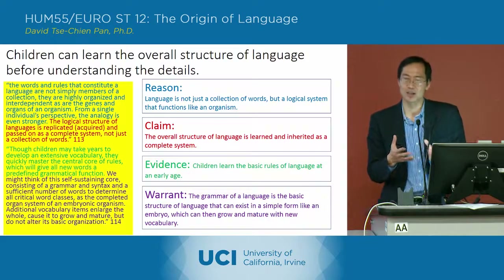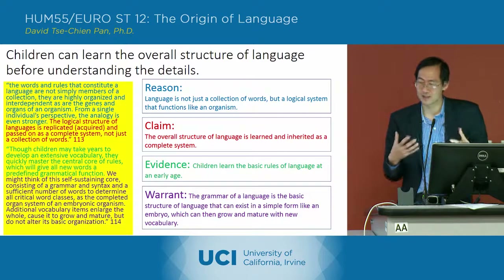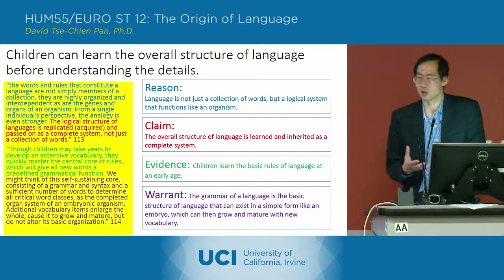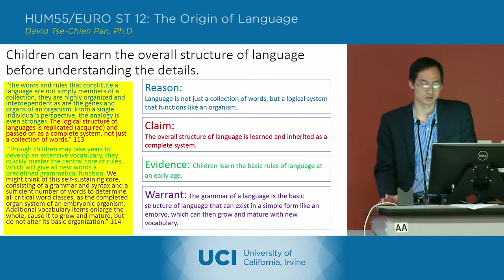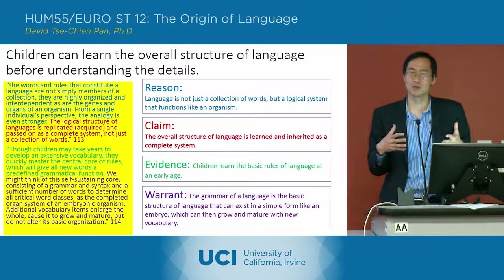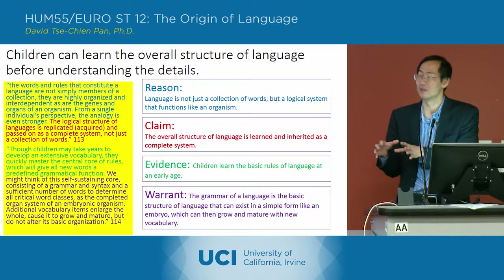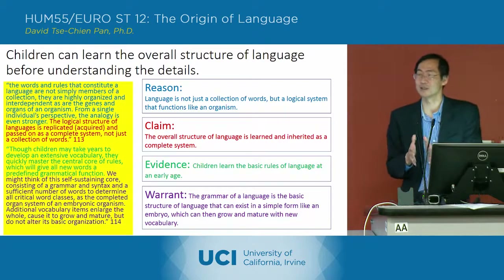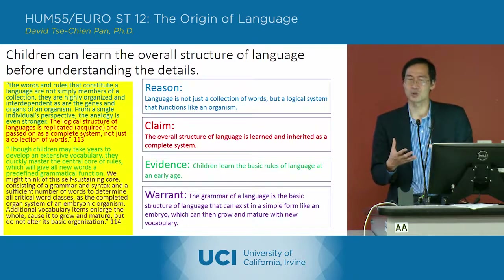Because of that, children can learn this simple version of a language at an early age — one that still functions as a symbolic system but is relatively simple for them. As they grow, they can add complexity and detail to that basic structure. This goes back to how a symbolic system could be simple: the chimpanzee example gave us a very basic symbolic system — six words, two rules, a distinction between verbs and nouns. That's basically all you need to have a basic symbolic system, and that's something a child could learn.